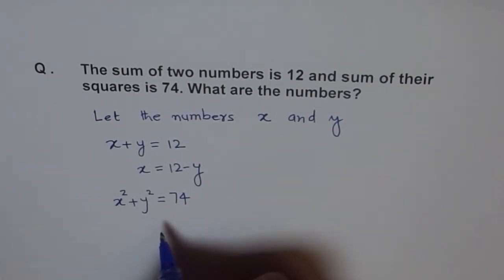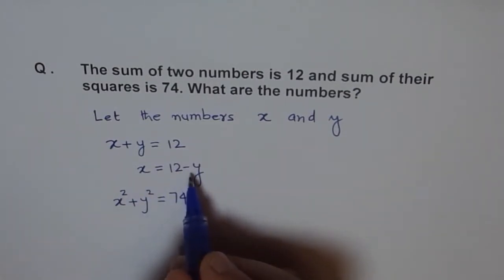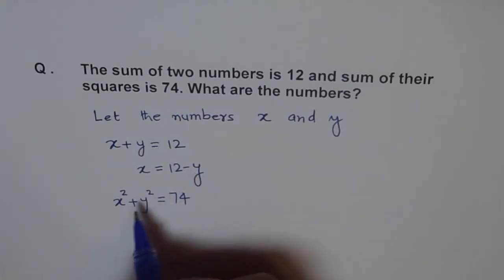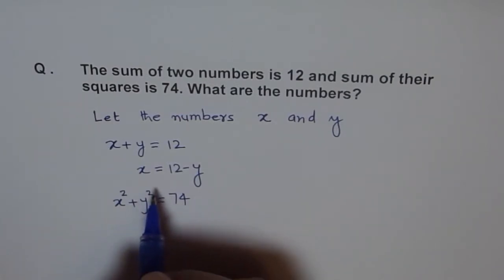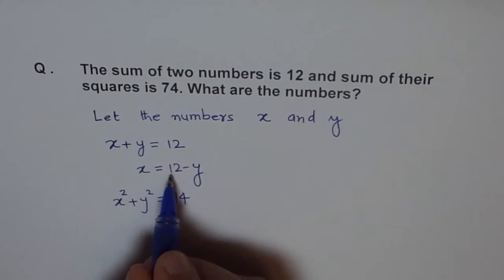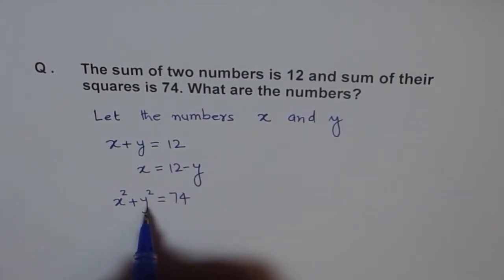Now, here, what you can do is, you can replace this x square with this 12 minus y. In that case, you will have a single variable equation. So, what we will do is, instead of this x, we will write 12 minus y. So, we will substitute the value of x in our second equation.